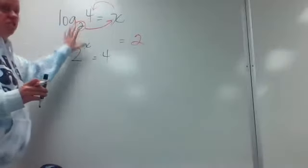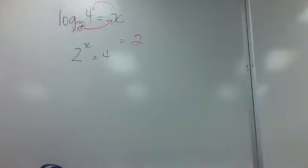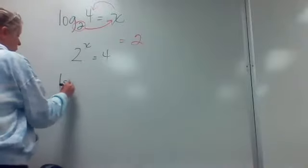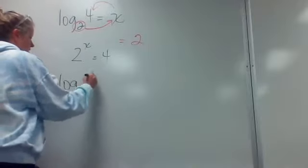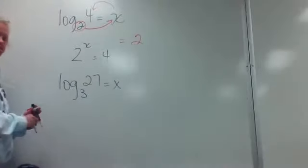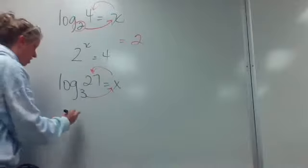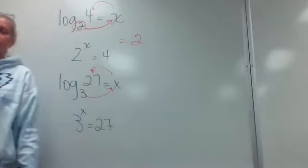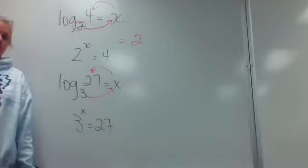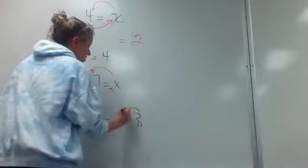You could rewrite it like this: 2 to what power equals 4? Two to the second power equals 4. Number 5 — same thing: log base 3 of 27. In other words, 3 to what power is 27? Three to the first is 3, three squared is 9, three to the third is 27. So the exponent — the log — is 3.